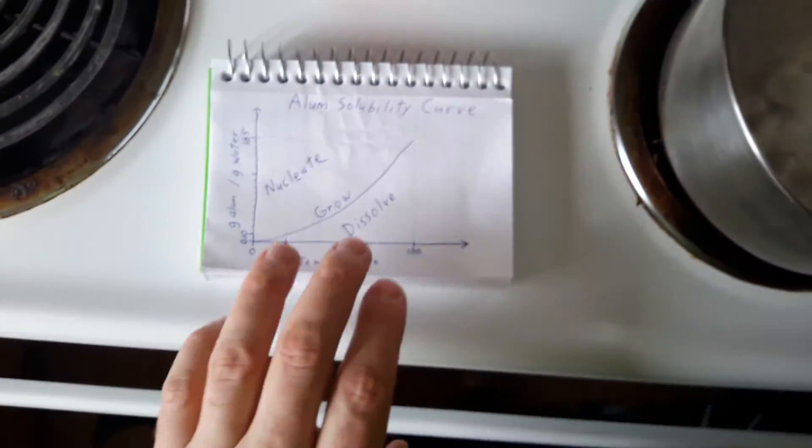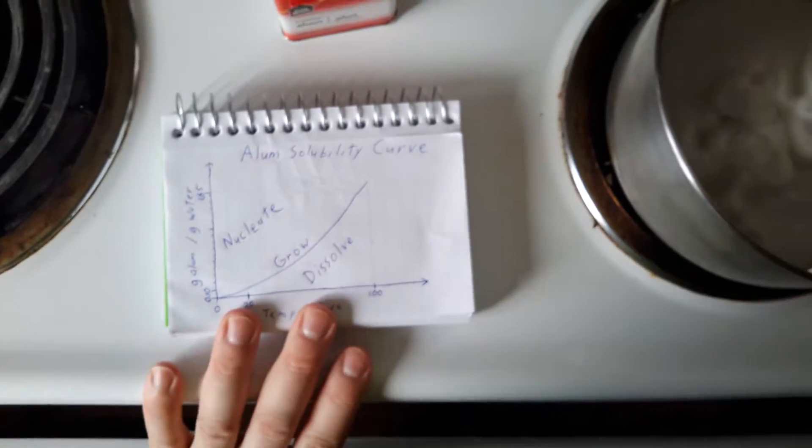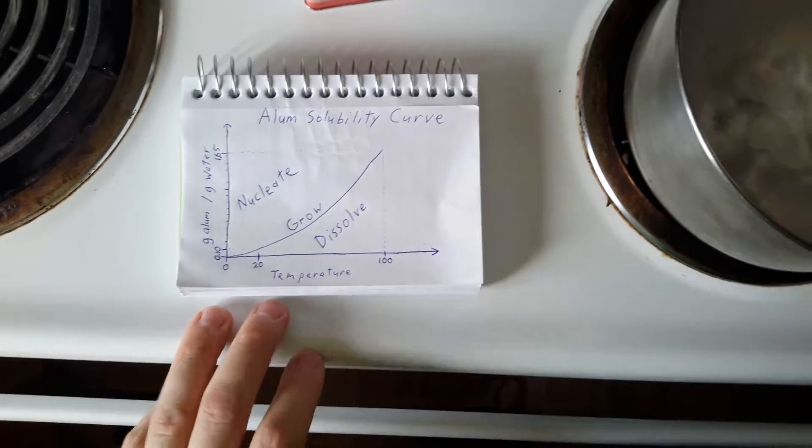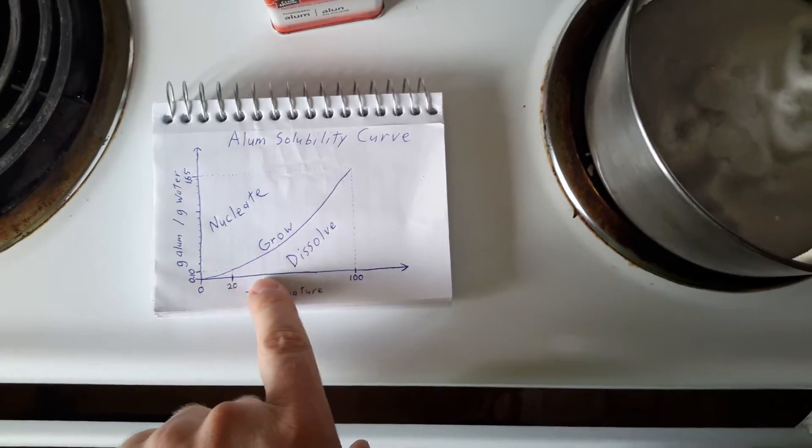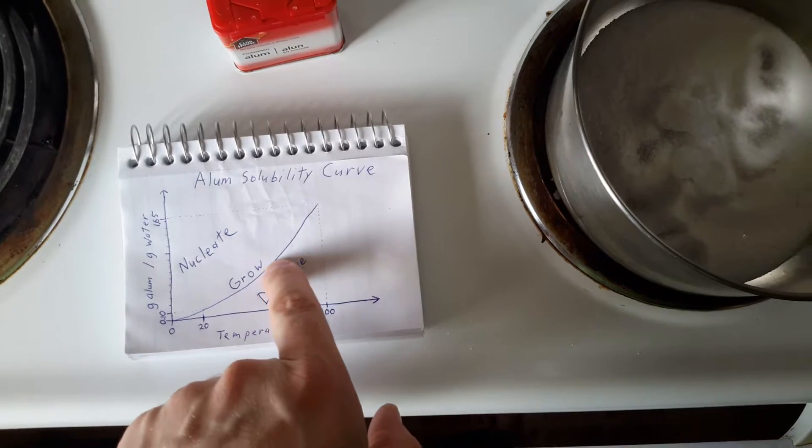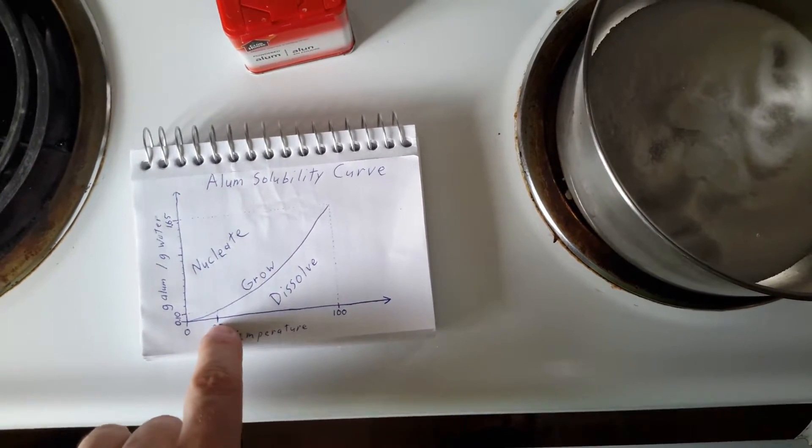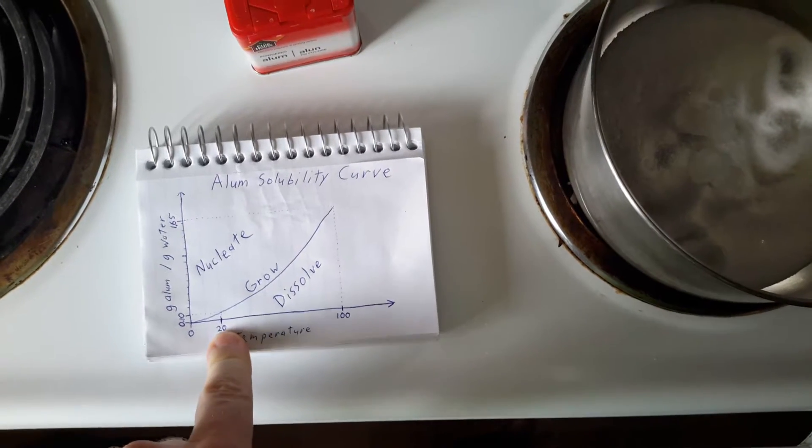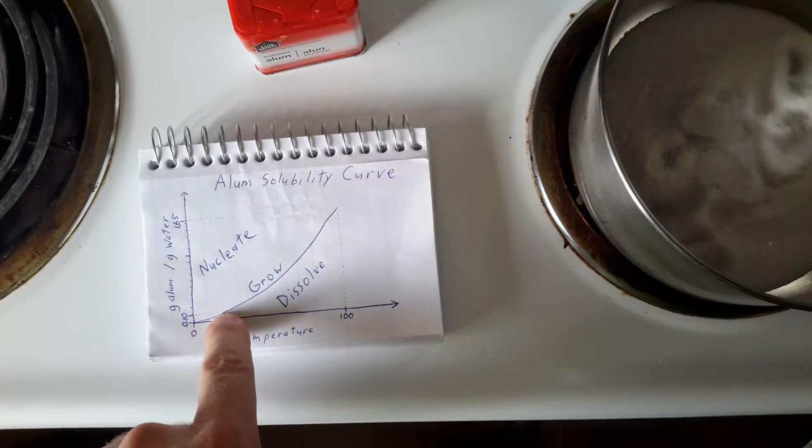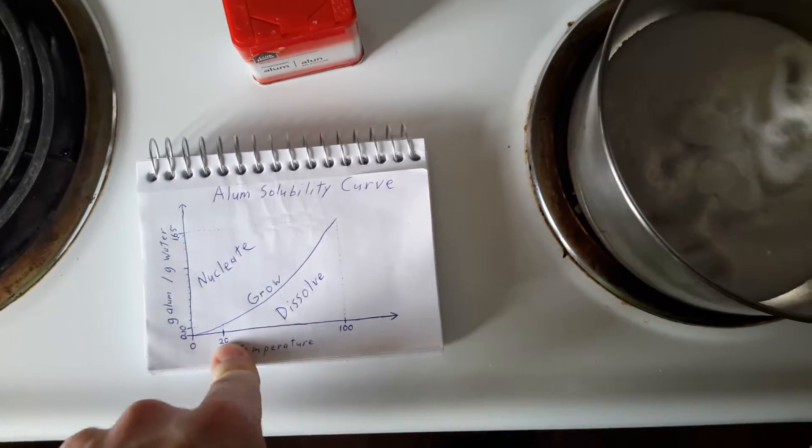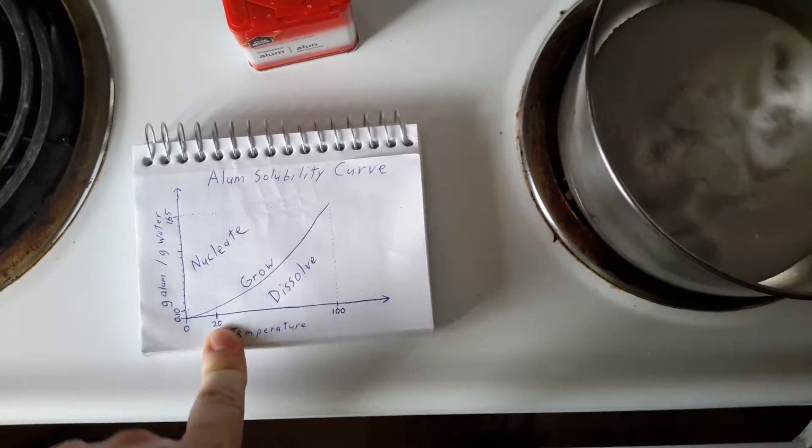Now if we take a look at the solubility curve of alum, like anything else, as the temperature rises you can dissolve more and more alum in the solution. So what I want to do is produce a solution that is at saturation, so right on this line, at about room temperature, around 20 degrees.